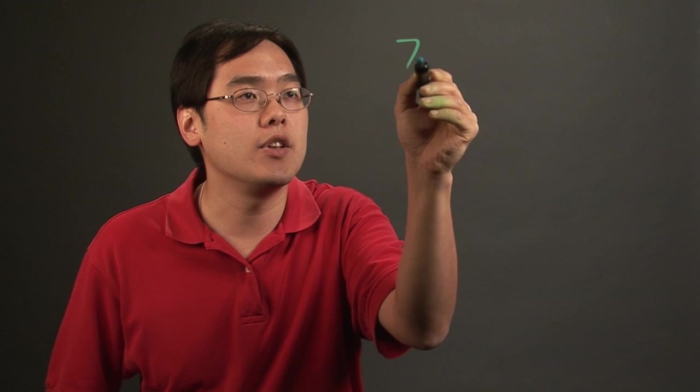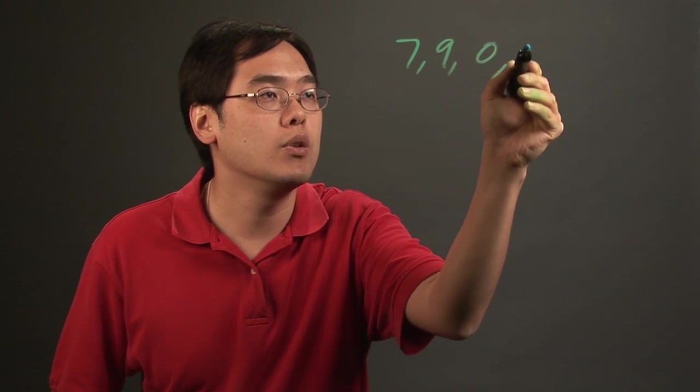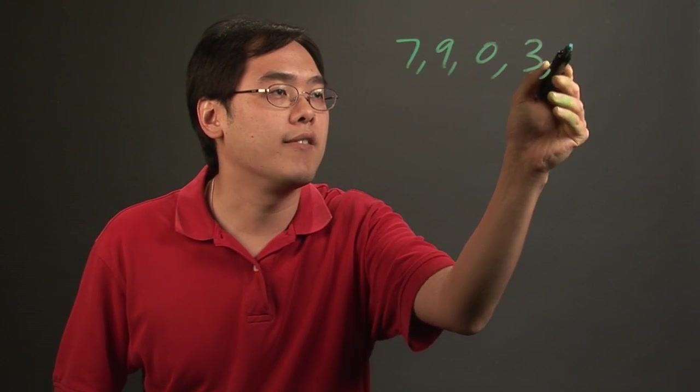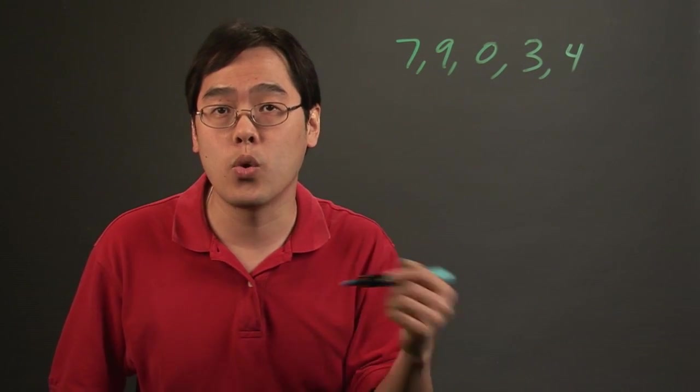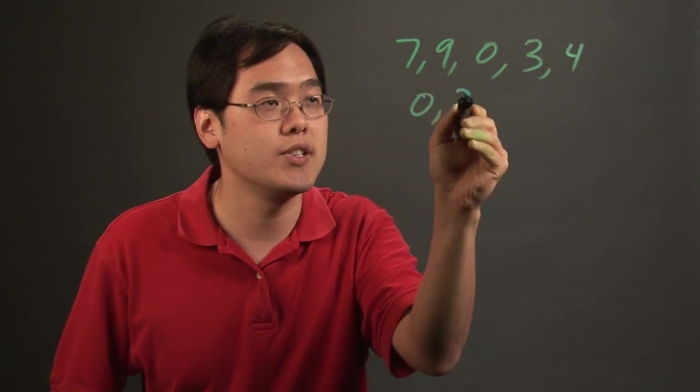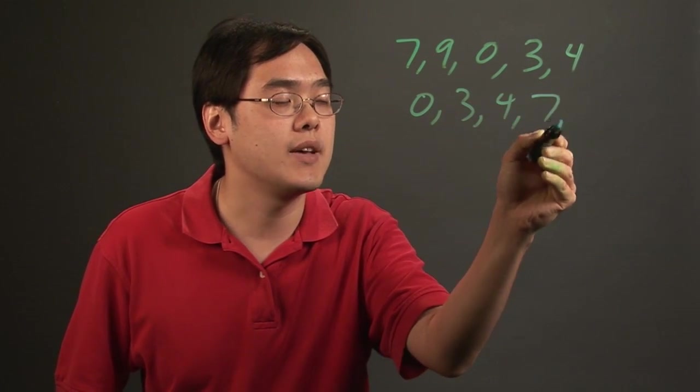For example, if you have a series of values such as 7, 9, 0, 3, and 4, you have to be sure the numbers are in order from lowest to highest, so you have to rewrite it as 0, 3, 4, 7, and 9.